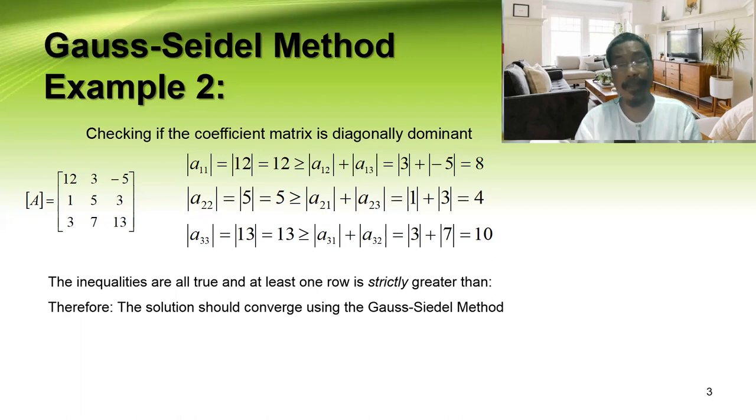Therefore, the inequalities are all true and at least one row is strictly greater than. At least one row, so the solution should converge using Gauss-Seidel method.